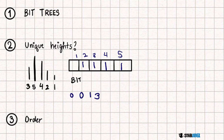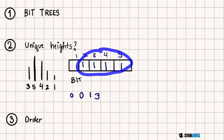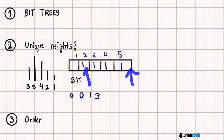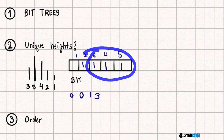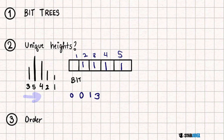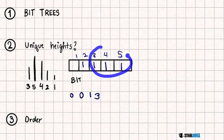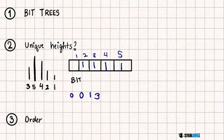So the values with indexes smaller than our current one. In order to find the number of inversions, all we have to do is find the number of values with a greater height. Since everything in this BIT tree has a smaller index, we find the number with a greater height — that's the last value minus the current i value. That gives us the number of hairs with a smaller index and a greater value, which is the inversions for each value.